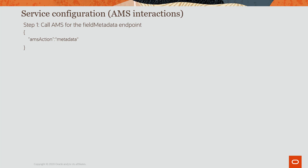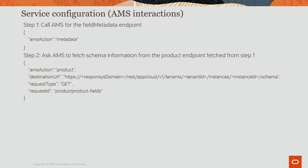Next, the app asks AMS to fetch the fields from the product using the metadata URL from step 1. This is done by AMS, but the app sends a PostMessage to the parent iframe. Note that the PostMessage details where the AMS action is product and the destination URL is from step 1. Note that the app does not communicate directly with the product here — the app just needs to send a trigger to the AMS iframe indicating the AMS action is product.